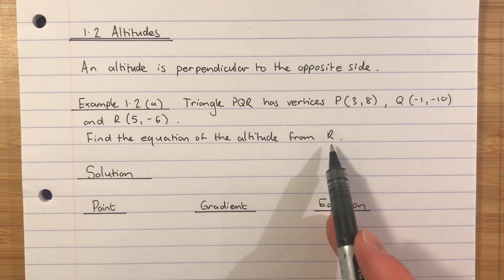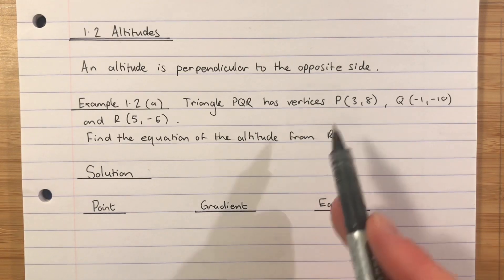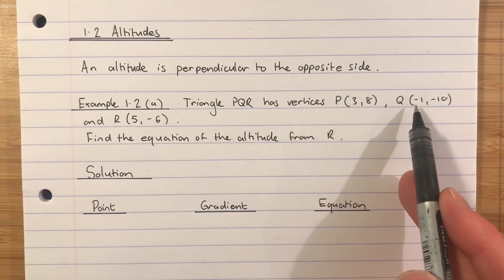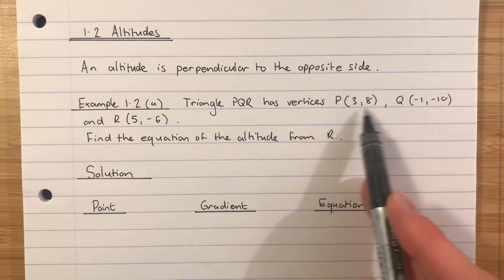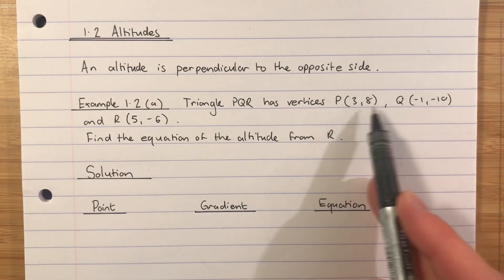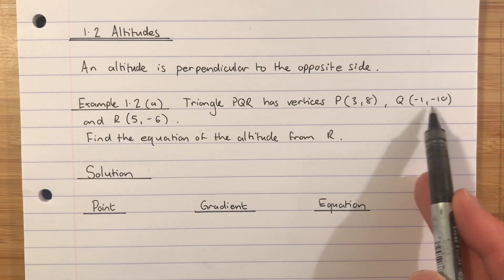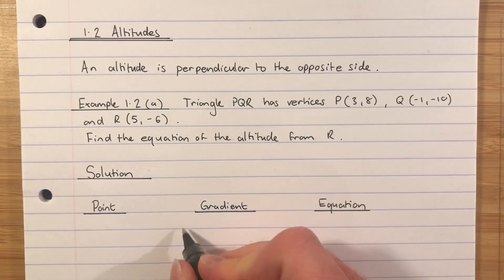If it's the altitude from R, you should be able to tell me what the opposite side from R is going to be in triangle PQR. The opposite side from R is PQ. So the statement tells me it's perpendicular to the opposite side, it's perpendicular to PQ. That means find the gradient of PQ and then find the perpendicular gradient. So this time we're starting with gradient.